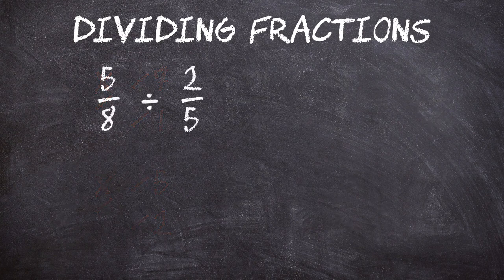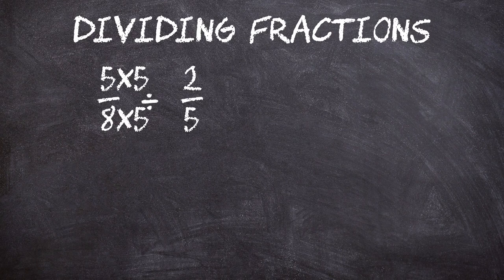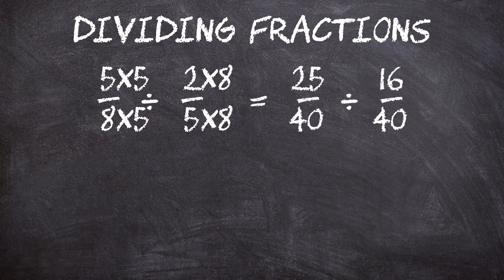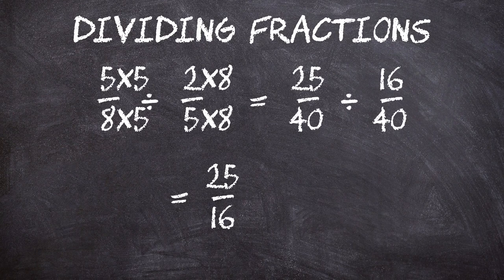There is another way we can divide fractions. Let's use the same problem again: five-eighths divided by two-fifths. If we can get both fractions to have the same denominators, then we can divide them. So if we multiply the top and bottom of the first fraction by five, and then the top and bottom of the second fraction by eight, we'll get a common denominator of 40. Now we can just divide the numerators to get 25 over 16, which equals one and nine-sixteenths, as before.